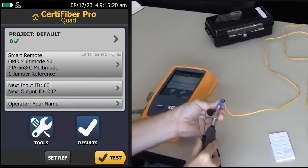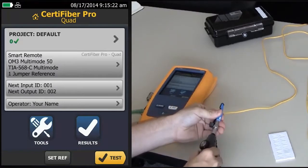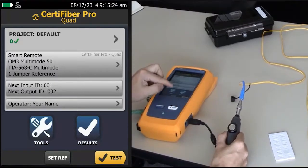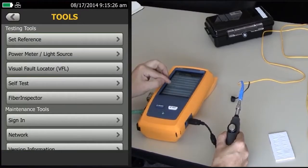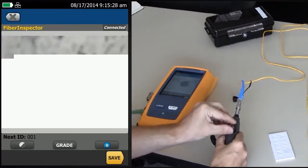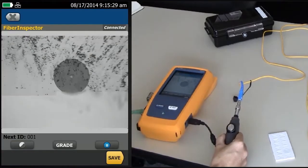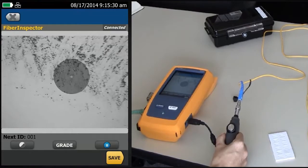If you have the optional inspection camera, you probably already know by now that you can tap on Tools and Fiber Inspector and see how bad your end faces are.